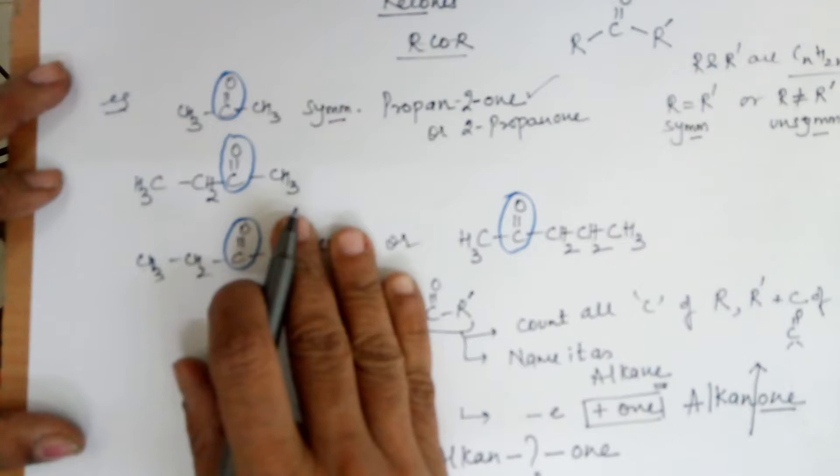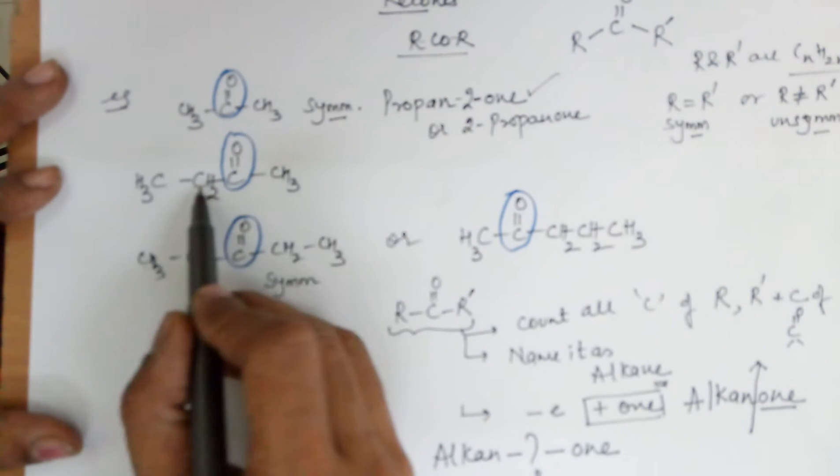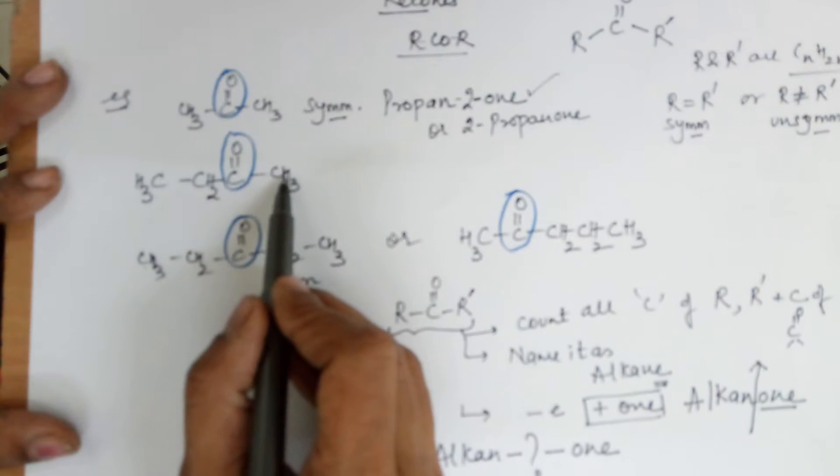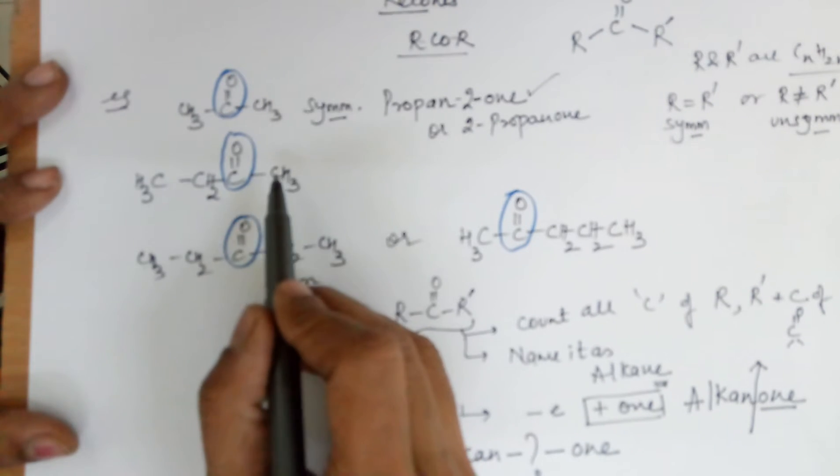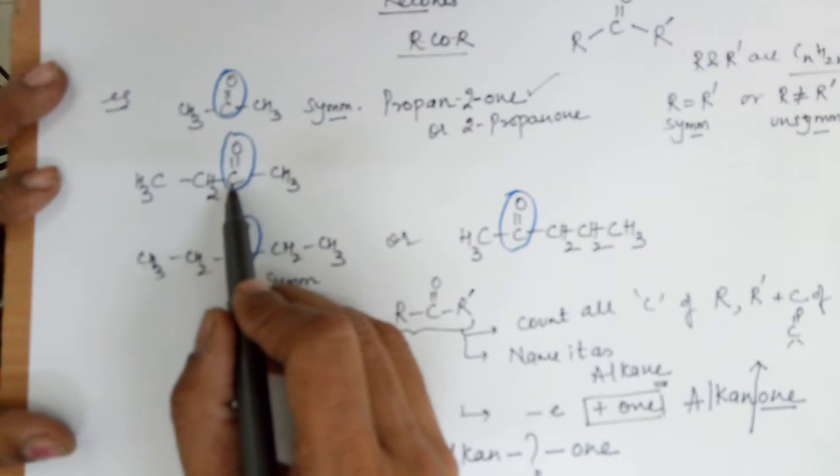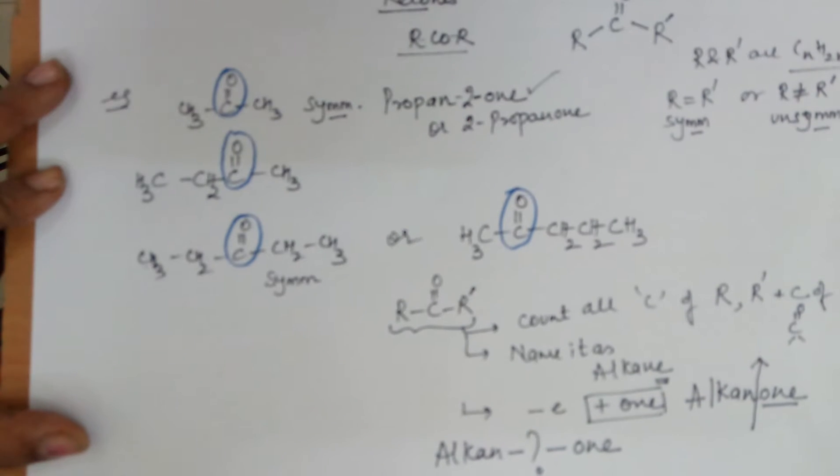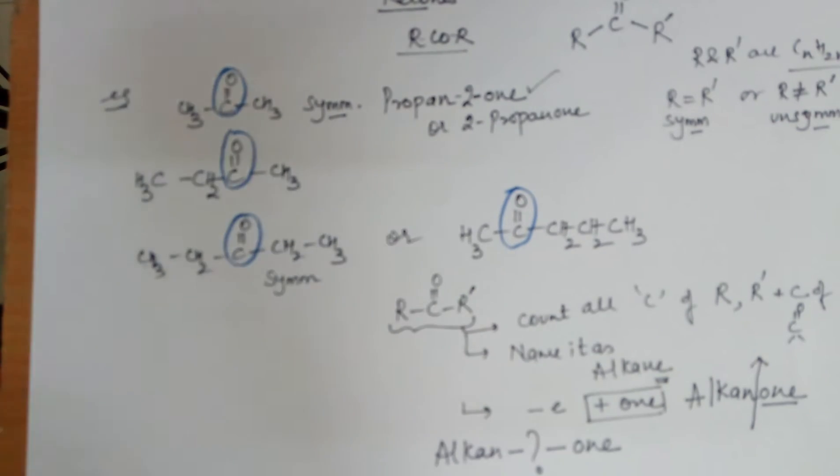Coming to the example number 2. How many carbons do I have? 1, 2, 3 and 4. If I start numbering from here, the ketonic carbon gets the third position. While if I do it from here, it gets the second position. So what would be the correct way of numbering it? Which I have already specified. The correct way of numbering it would be that you number it from the right.